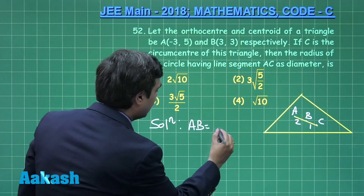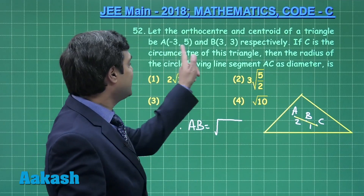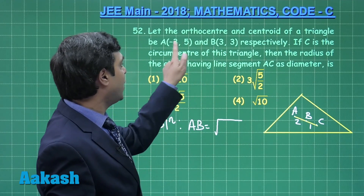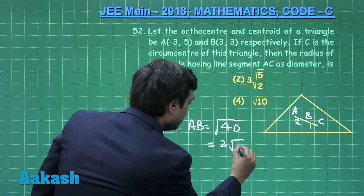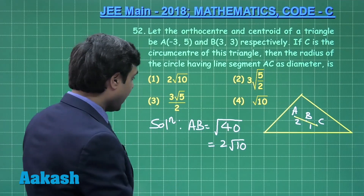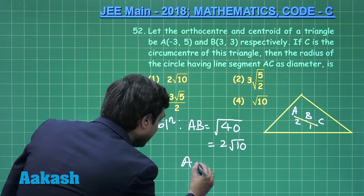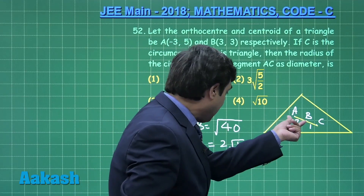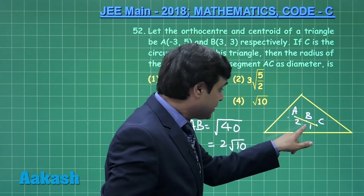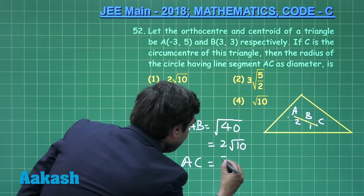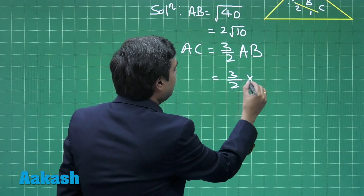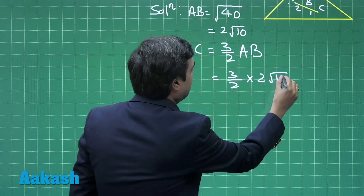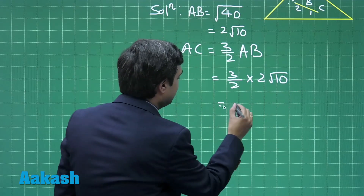Length AB equals the square root of the distance between the two points: √(6² + 2²) = √40 = 2√10. We have to find length AC. Since the centroid divides in the ratio 2:1, AC is clearly (3/2) of AB.